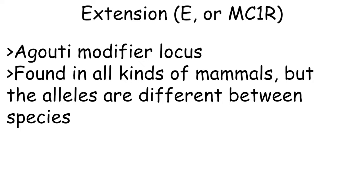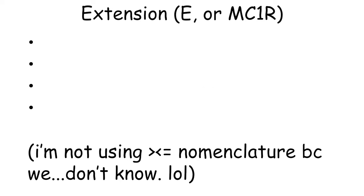The extension locus, also known as MC1R, is a modifier of agouti that is in basically every mammal that has agouti. In cats, there's four alleles on the extension or E locus that we know of.